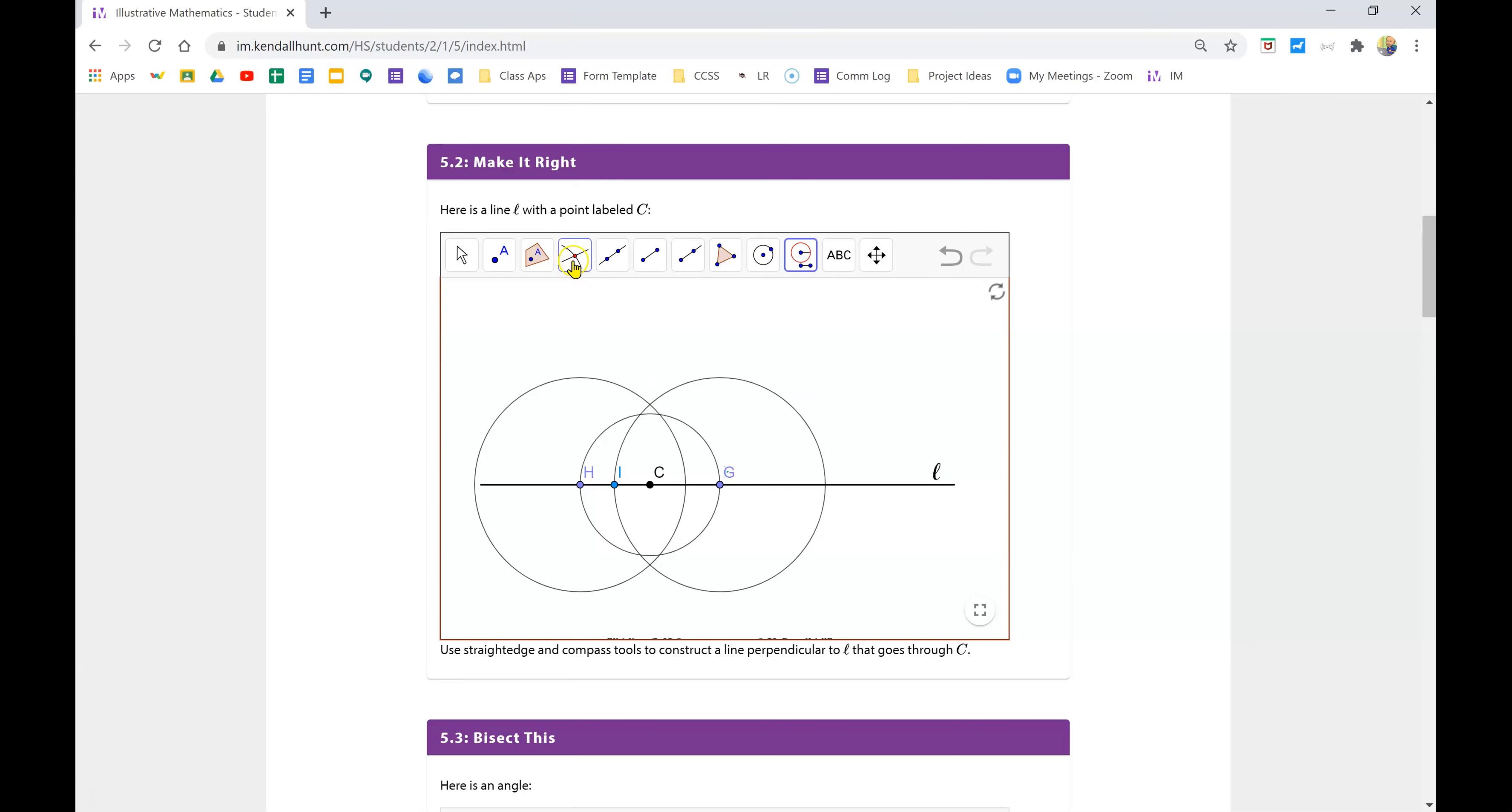And again, I can use my intersect tool. It's this one. I'm going to click on this circle and this circle. And now I have the two points where those two circles intersect and I'm going to draw a line through them.